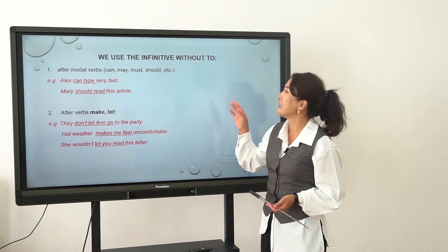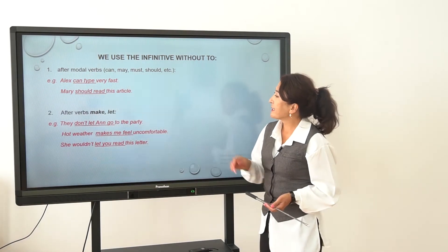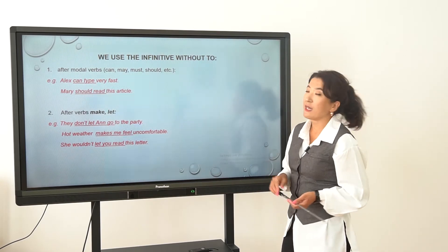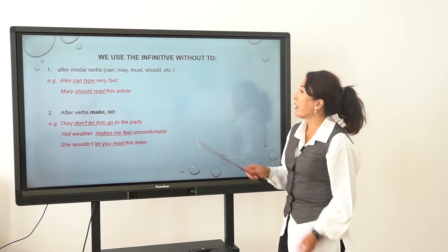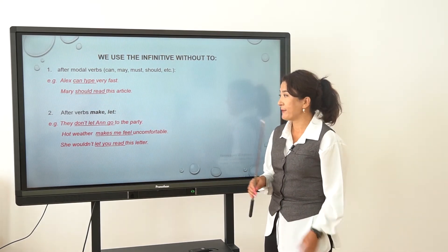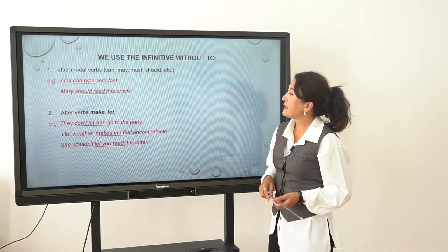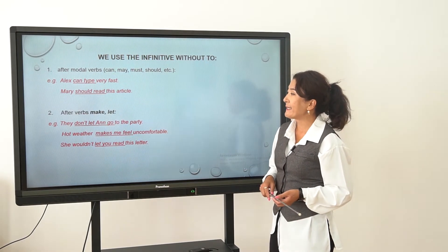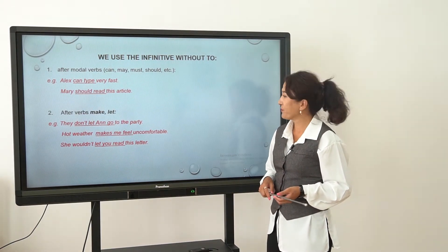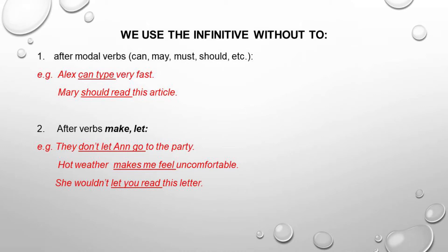Next point: we use the infinitive without 'to' after the verbs 'make' and 'let'. For example, 'They don't let him go to the party' — you can see we didn't write 'to'. 'The hot weather makes me feel uncomfortable.' 'He wouldn't let you read this letter.'